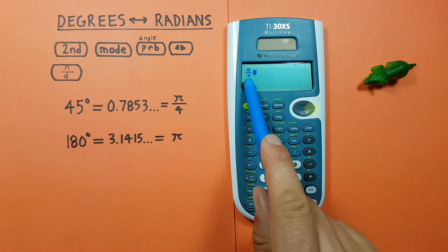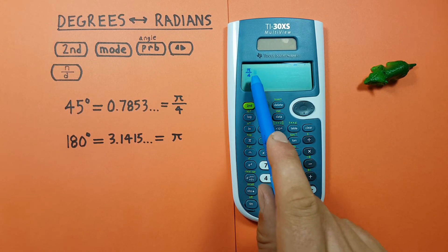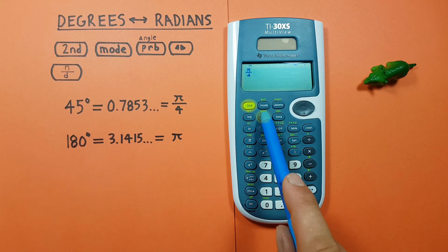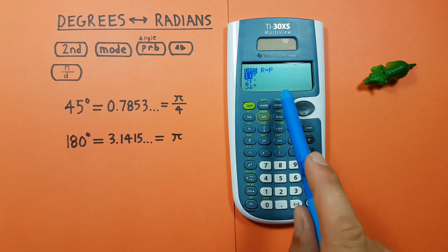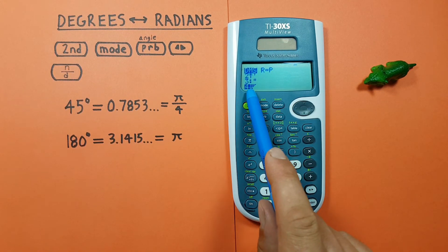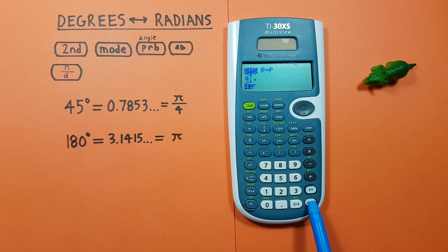There we go. And now we need to tell our calculator this is a radian. So second, PRB angle, there we go. And if we scroll down on this list, number 4 will give us r. So we press enter on r.